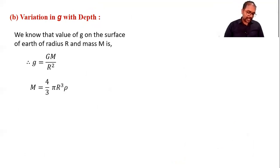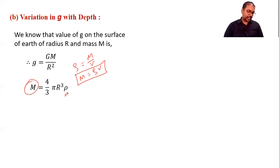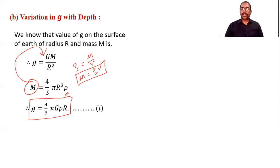Density is mass divided by volume, so mass equals density times volume. Using this, mass of Earth M equals volume of the Earth multiplied by density ρ. The Earth is spherical, so volume = 4/3 πR³. Substituting M into the formula, we get g = (4/3)πGρR. This is equation number one in terms of density.